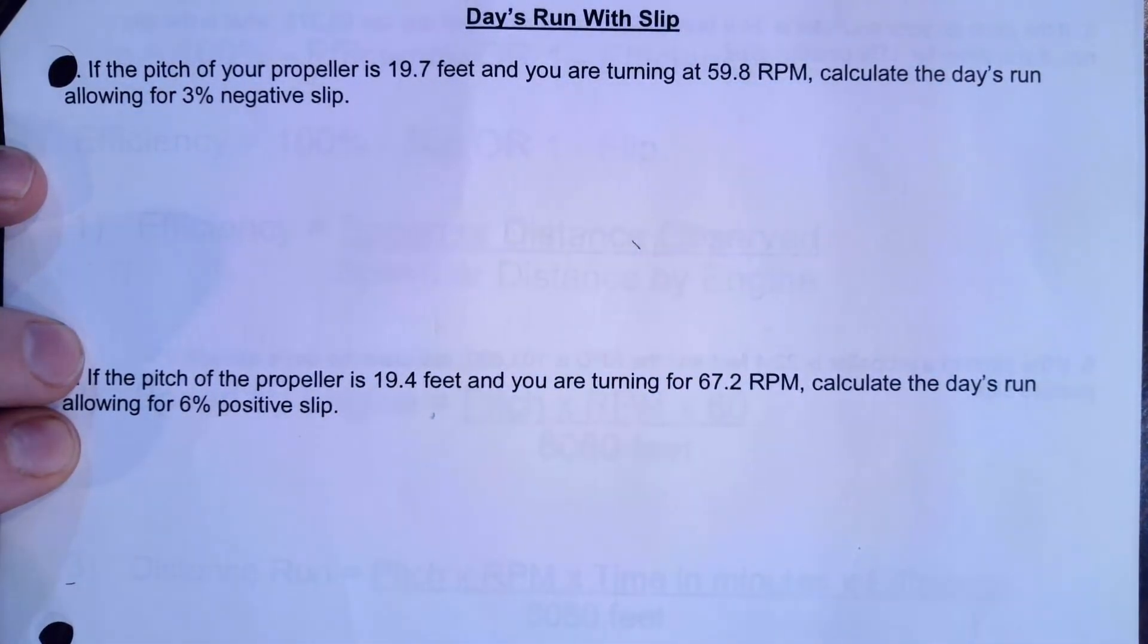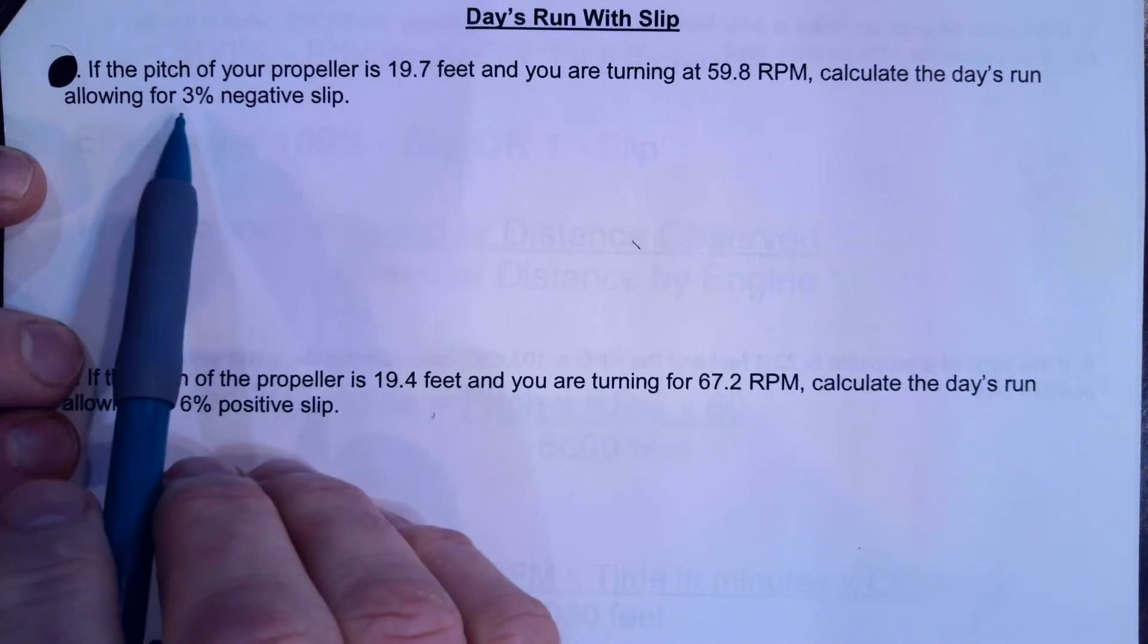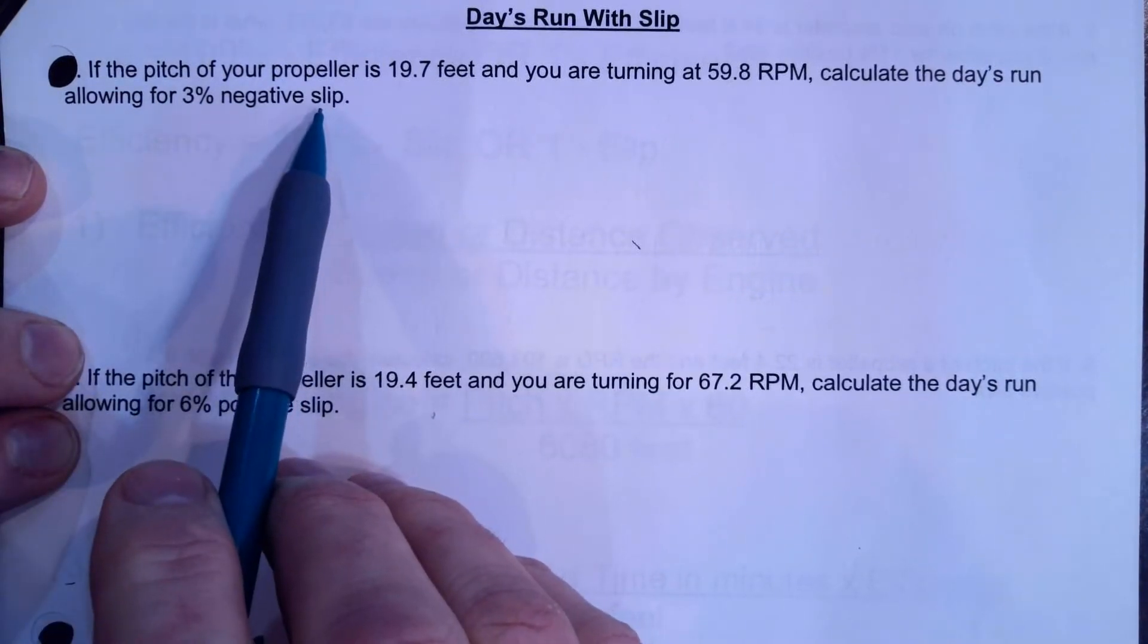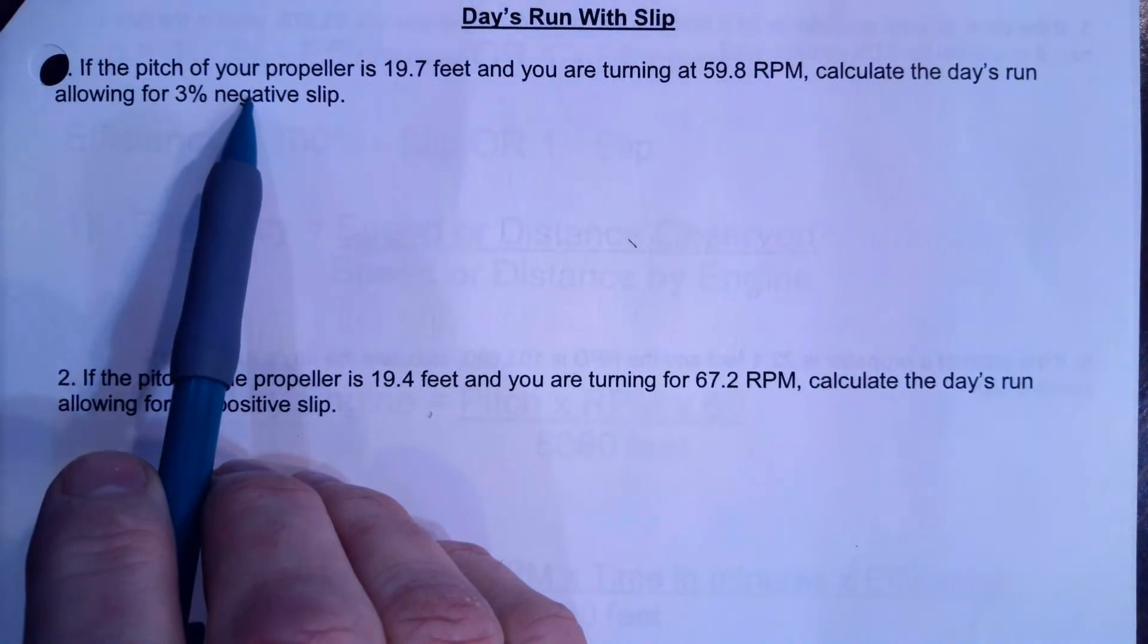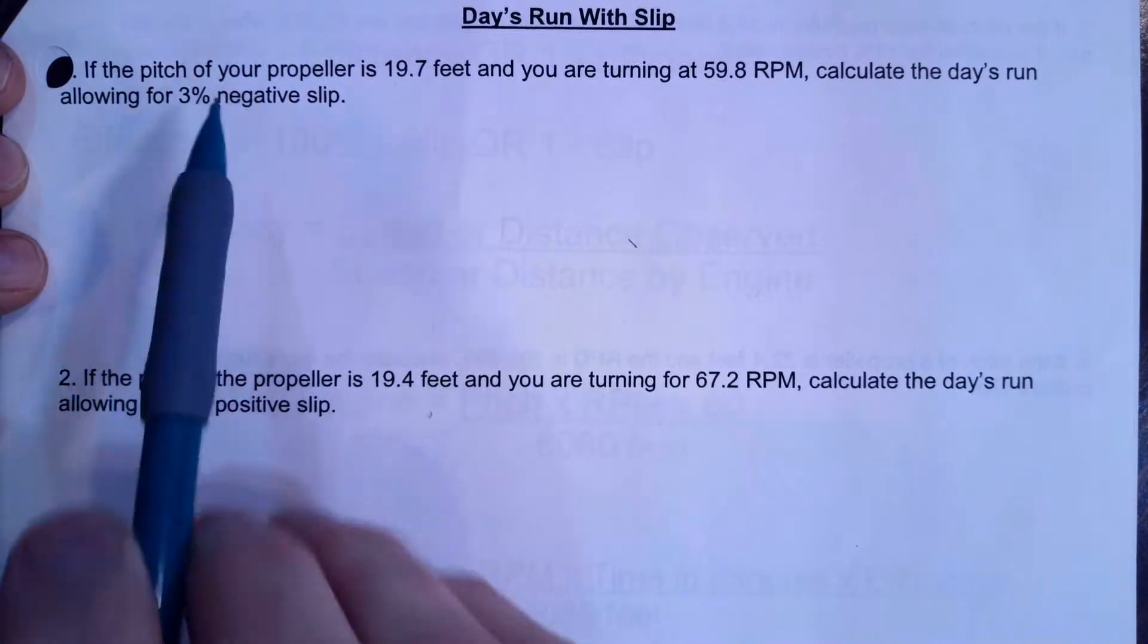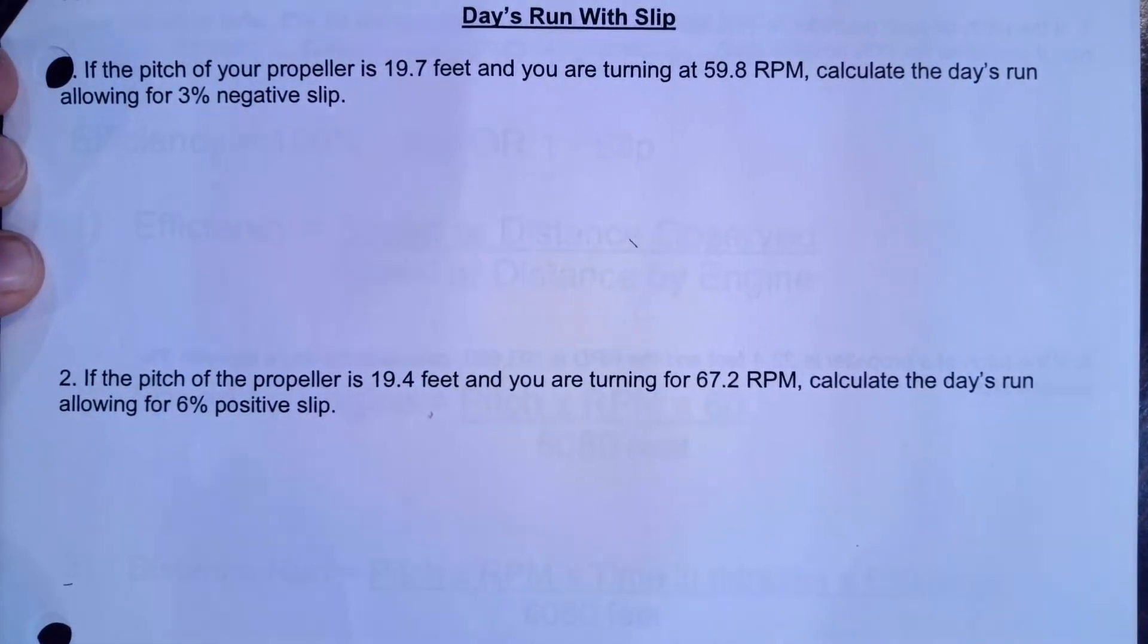And they want us to calculate the day's run with a 3% negative slip. So what this is saying here is that we must have a wind or current behind us because we have a negative slip. But anyway, what we're going to need is the formula for engine speed.